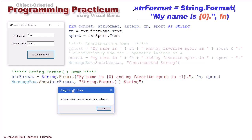That is what we did here in this String.Format variable. We are creating our prompt for our message box of String.Format. My name is, I have an element of zero. My favorite sport is an element of one. Close my string. A comma and then element zero is the value of fn, element one is the value of sport.